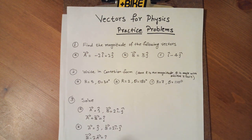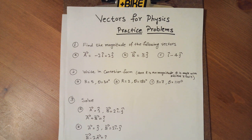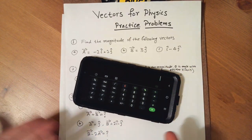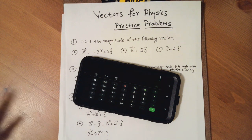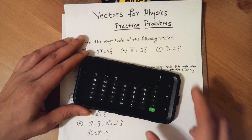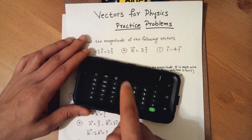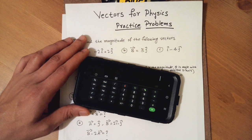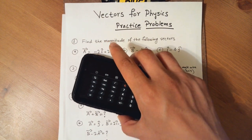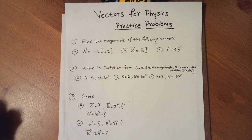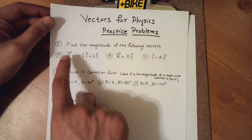Let's get started. I have five problems and each one has sub-parts a, b, c — fifteen total. To solve most of these problems you'll need a calculator. I personally use a phone, but if you have a graphing or scientific calculator please use that. Make sure you use a scientific calculator, not a normal one.